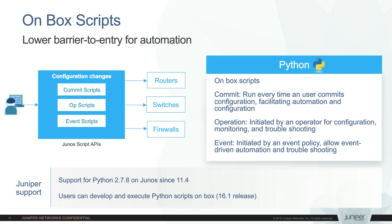A good example of a commit script is: if someone changes an interface, it must include an interface description. You can have logic that says if this candidate config does not include an interface description, then we will not allow it due to some business rules inside your organization. Using these small tools like commit scripts, you can really enforce consistency across all your commits.